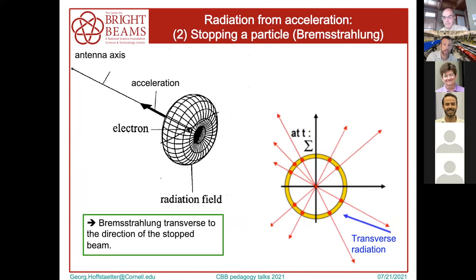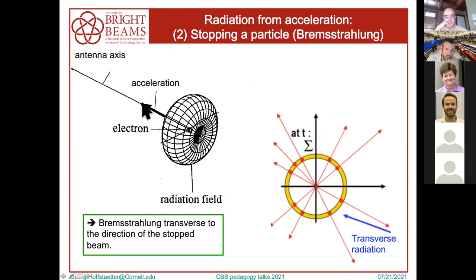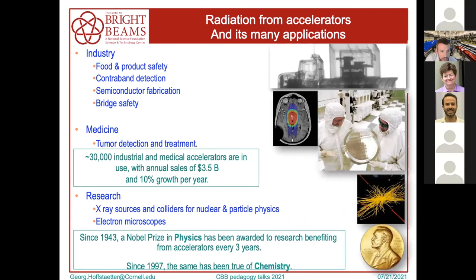The next radiation pattern is what you get when you accelerate particles by stopping them in a material — bremsstrahlung. You take electrons, hit them onto a material, stop them; that's very strong acceleration. The electrons get braked and radiate in the transverse direction in a donut shape with azimuthal symmetry. This radiation pattern is actually the most common radiation produced by accelerators, especially for many industrial applications.